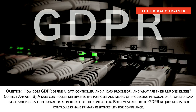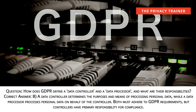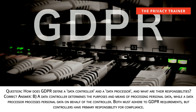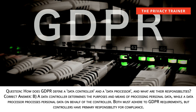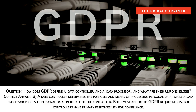Question: How does GDPR define a data controller and a data processor, and what are their responsibilities? Answer B: A data controller determines the purposes and means of processing personal data, while a data processor processes personal data on behalf of the controller. Both must adhere to GDPR requirements, but controllers have primary responsibility for compliance.